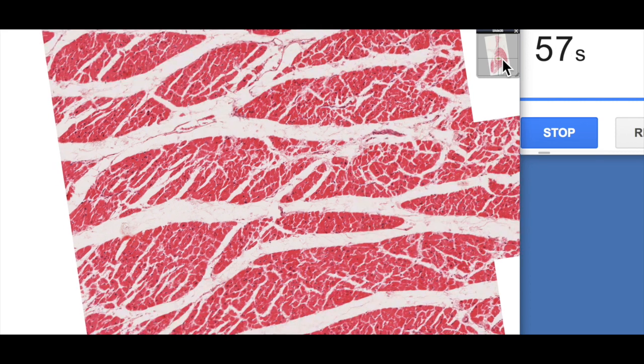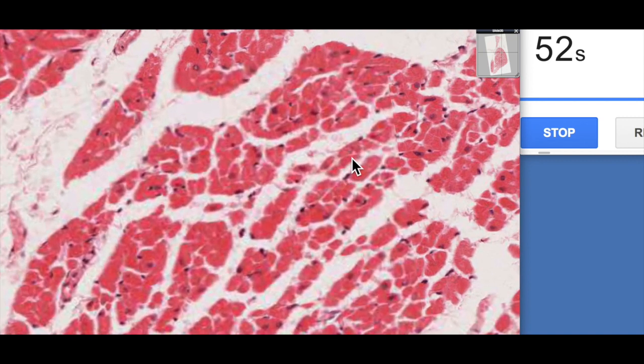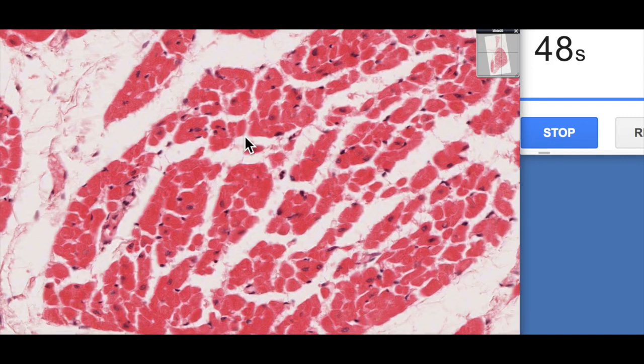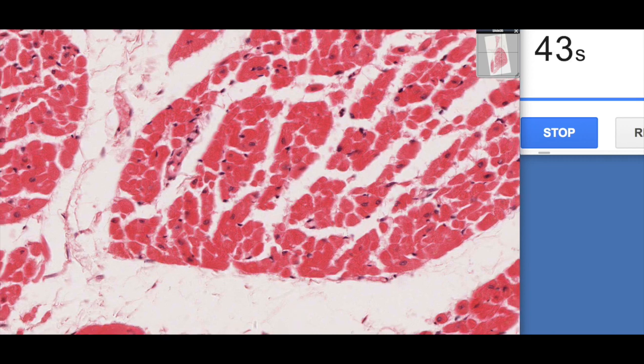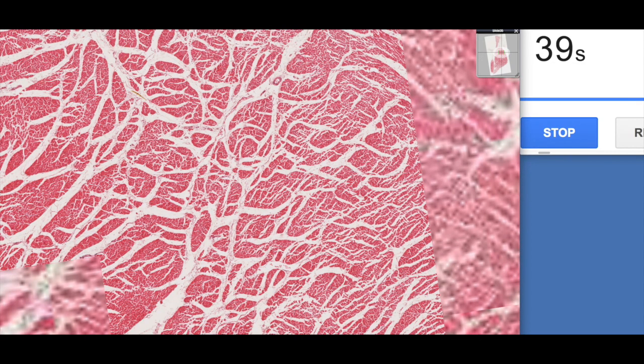And I think if we sort of zoom out to the periphery here, we can actually see some of these in cross section a little bit better. So you can see that they're a bit larger cells. Obviously they've got to contract further, create greater pressures to be able to move the blood through the body. Whereas the atrium only needs to move the blood down to the ventricles.